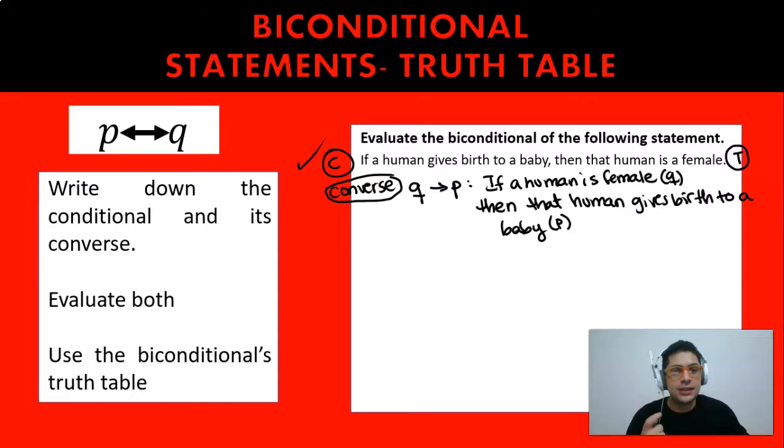Now if you guys take a look at this, you're going to see that this converse is actually going to be false, because we know that not all women or not all female humans give birth to a baby because of ethical or biological reasons or economic situations or whatnot. That converse is not true. If a human is female, it is not necessary that they give birth to a baby. They have the capacity to, but that doesn't mean that they will.